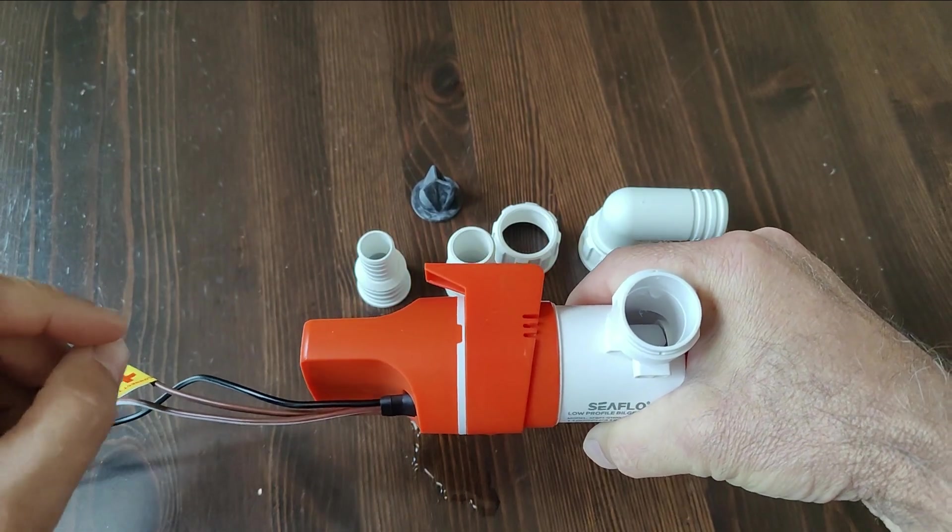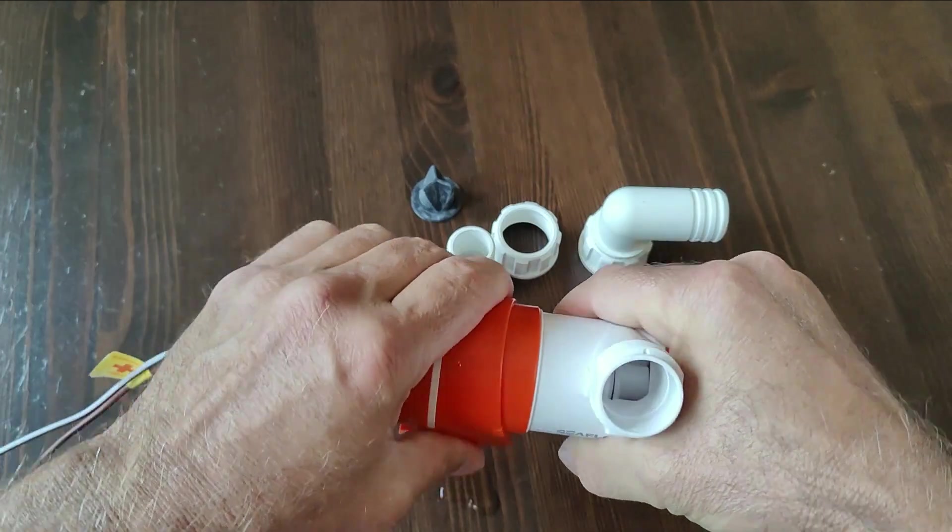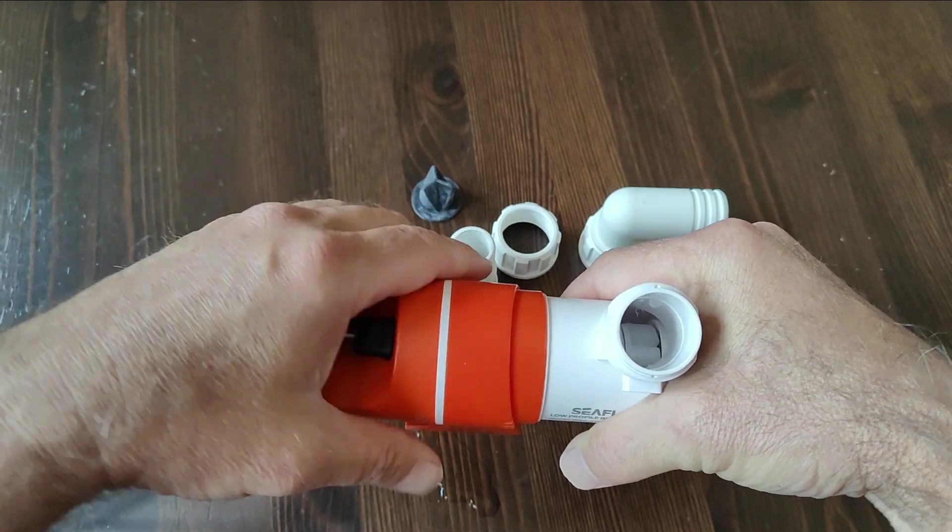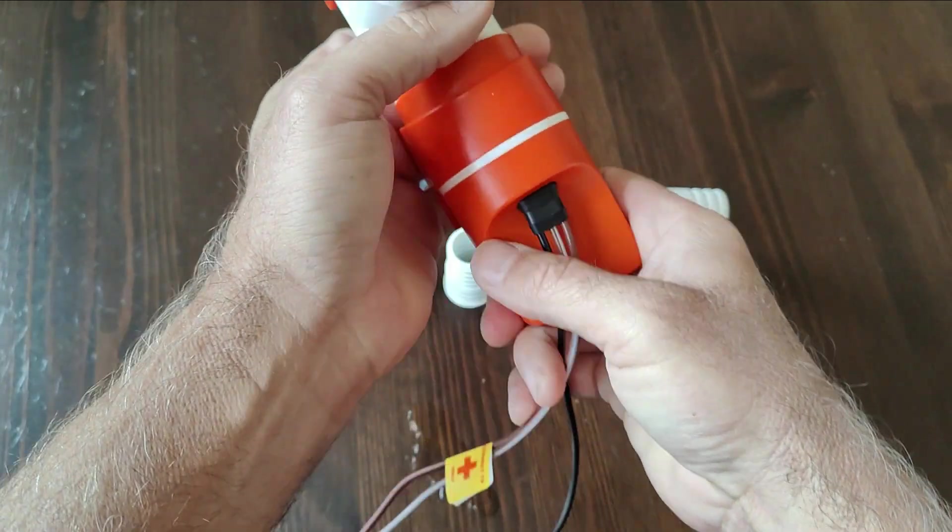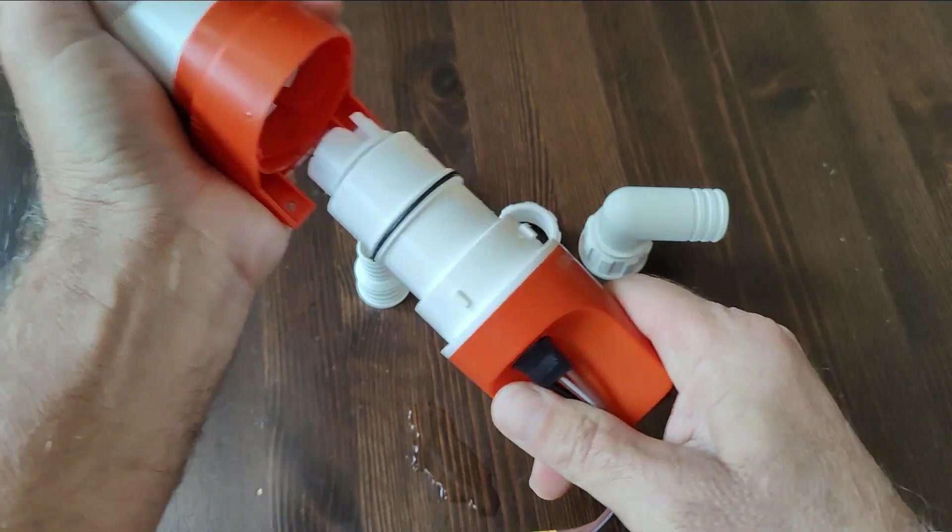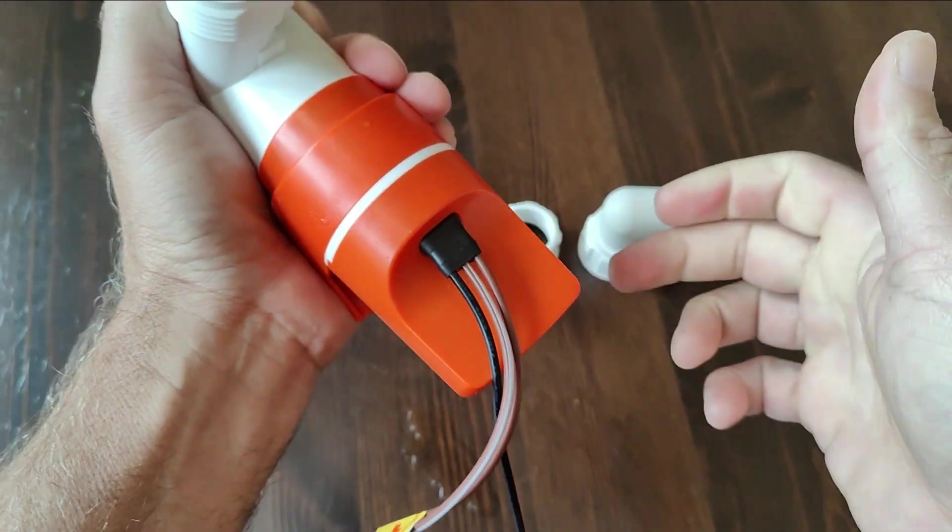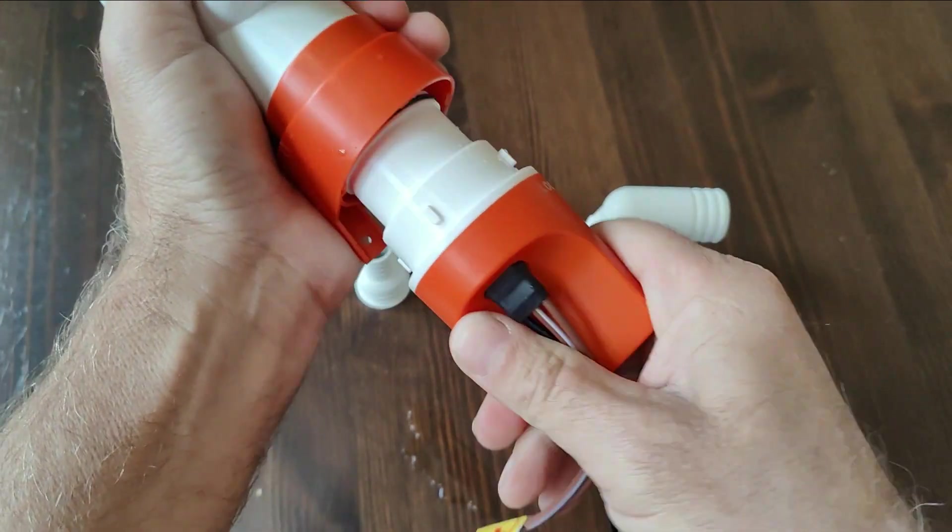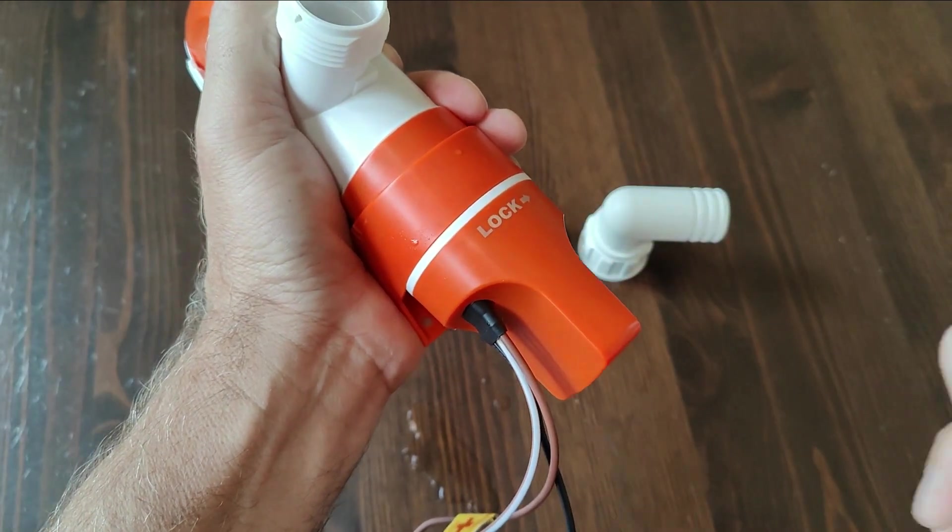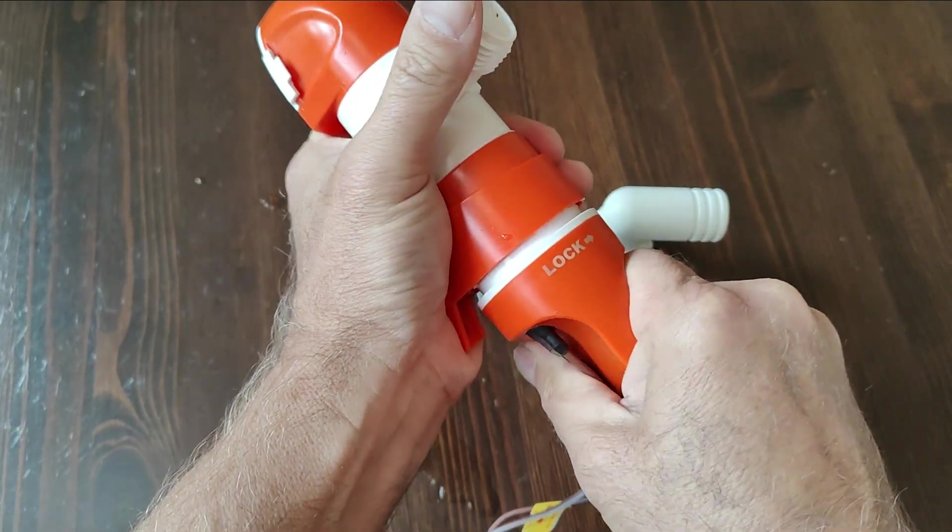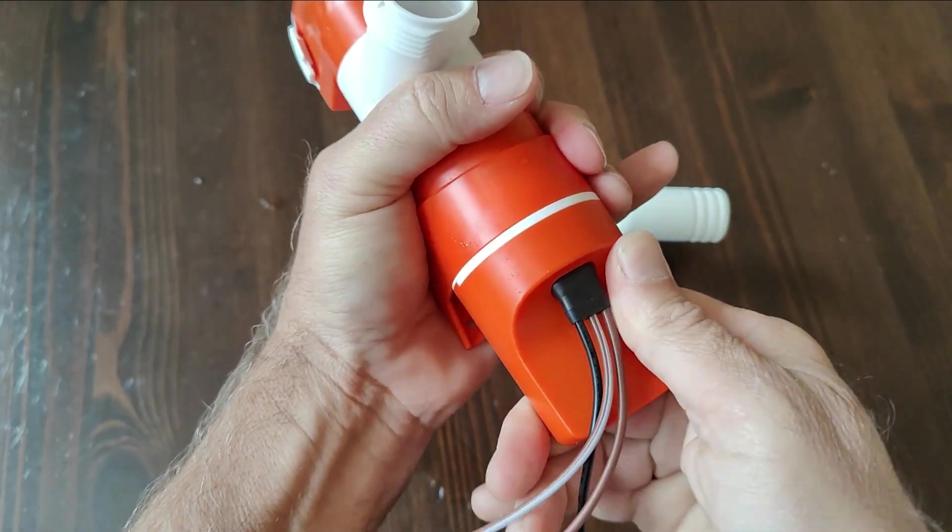So you could side mount it on a bulkhead, mount it to the bottom of the boat, and it has a removable motor. This motor can be installed in increments of 90 degrees, and that's going to be important when we talk about the water sensors on the pump.